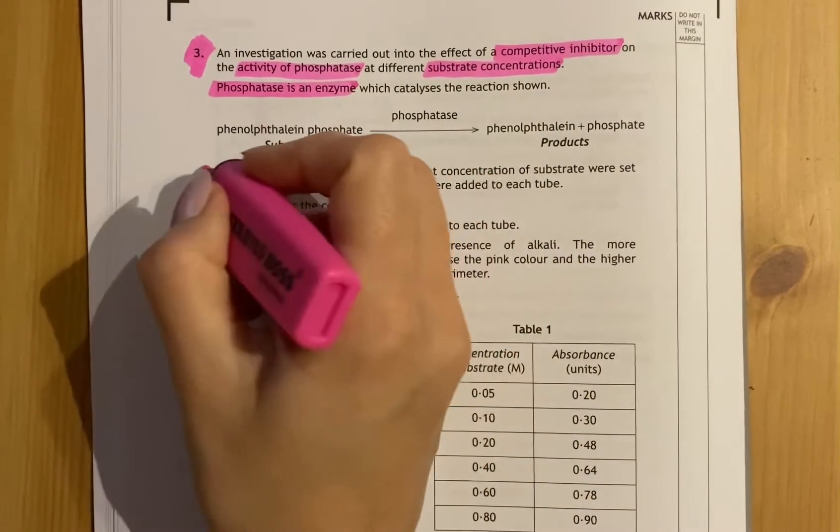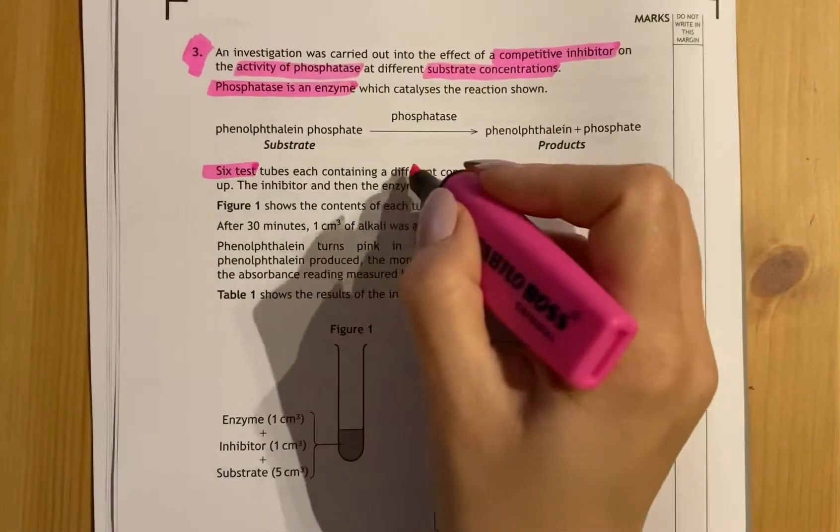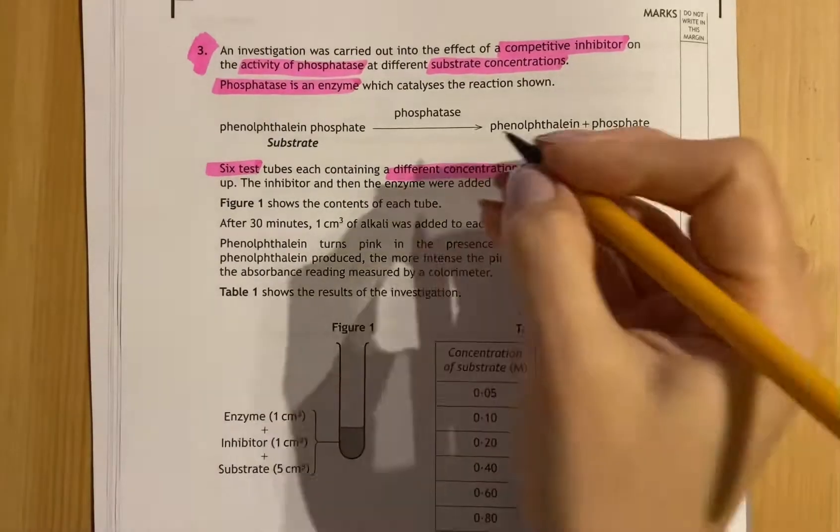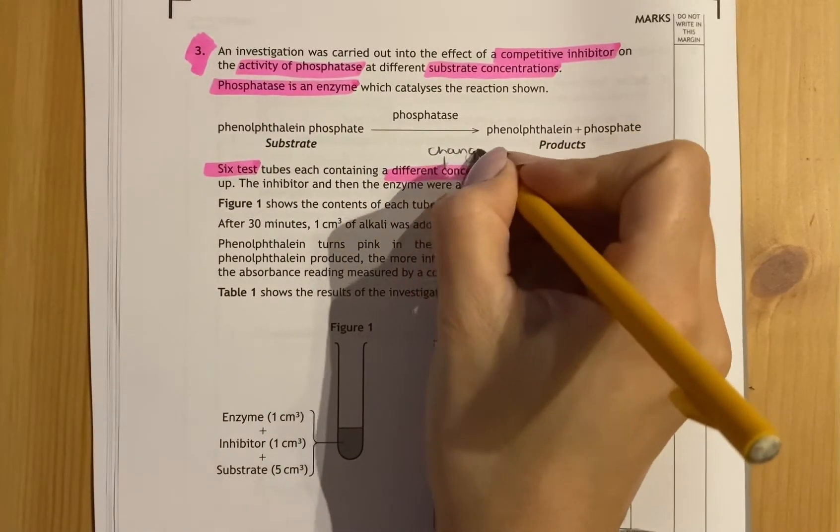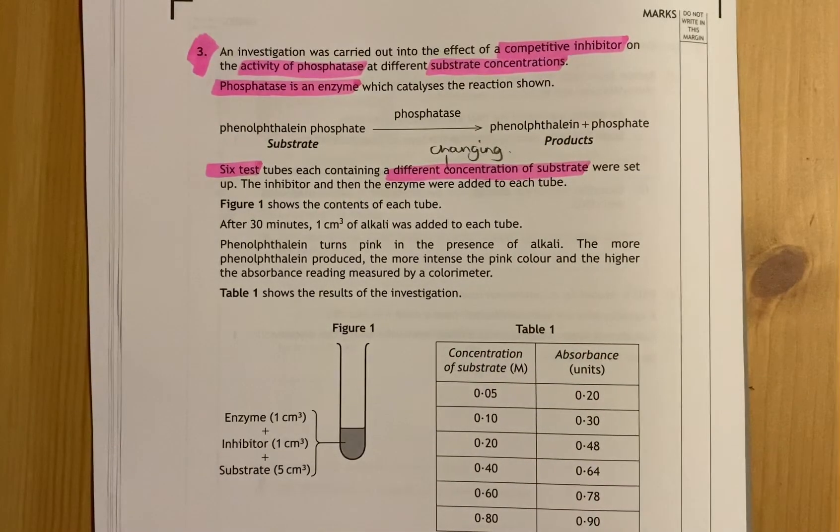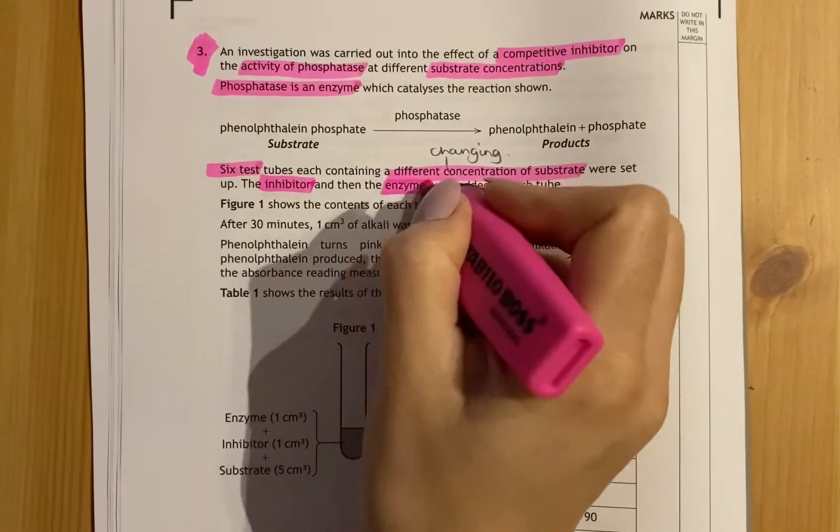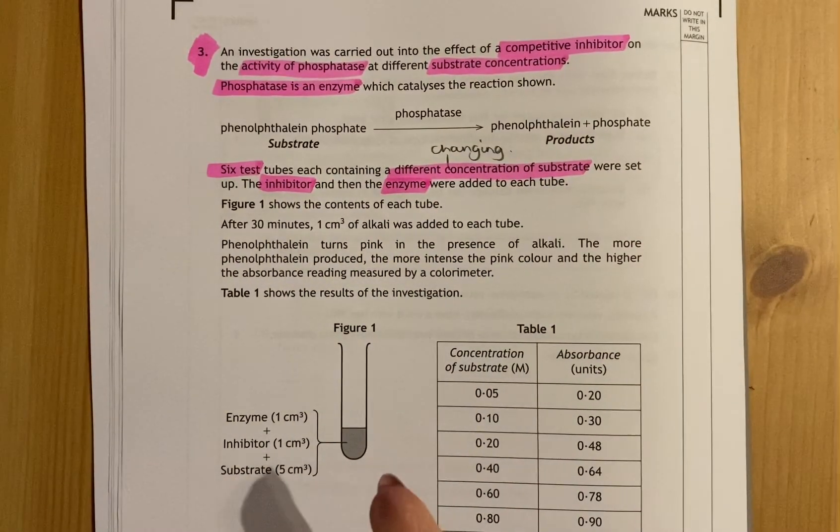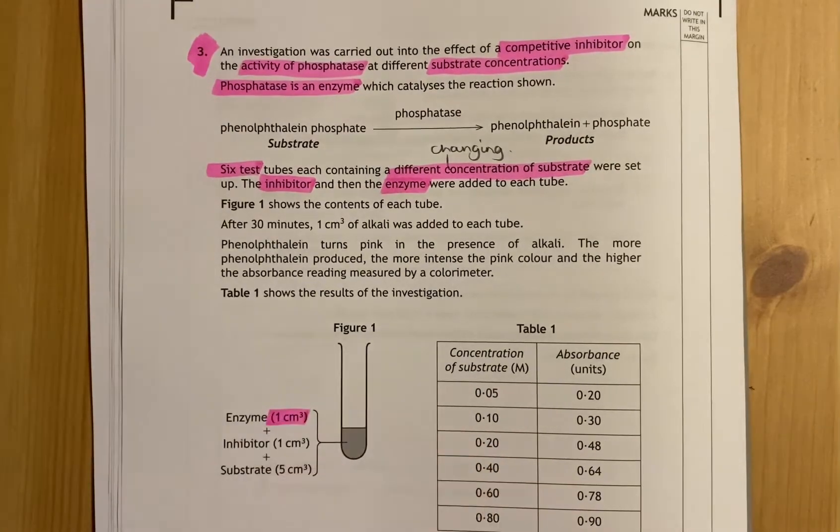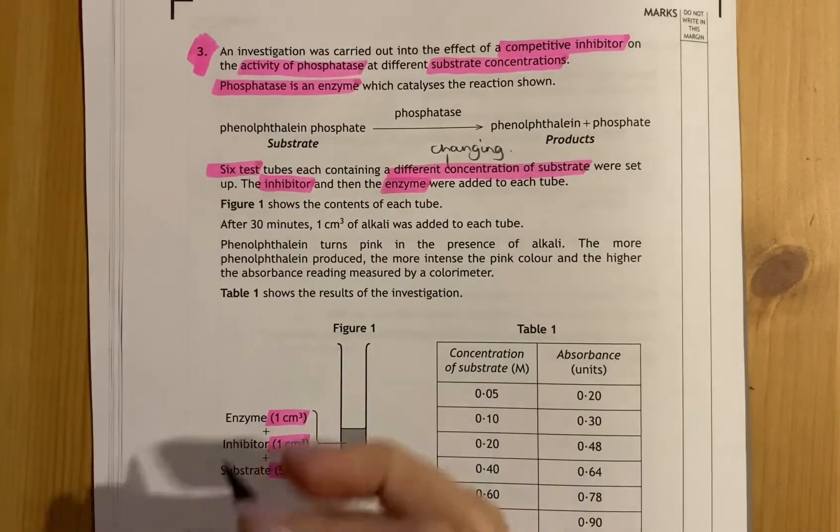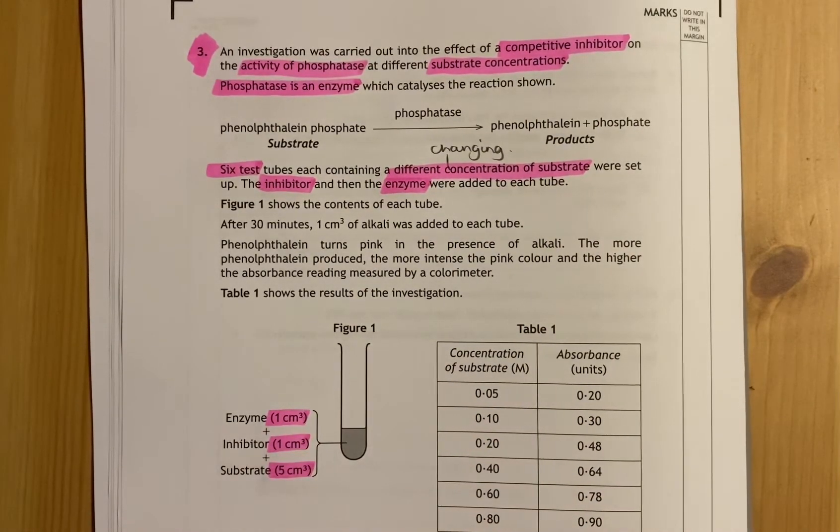Phosphatase changes phenylphthalene phosphate into phenylphthalene and phosphate. We have six test tubes set up containing a different concentration of substrate. So this is what they are changing. The inhibitor and the enzyme were then added afterwards to each tube. Notice how they've stated volumes - one centimeter cubed of enzyme, one centimeter cubed of inhibitor, five centimeters cubed of the substrate.